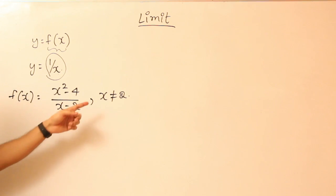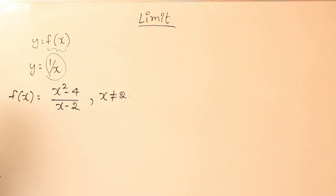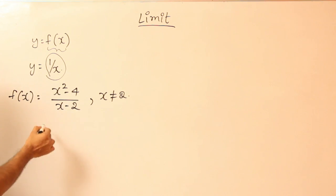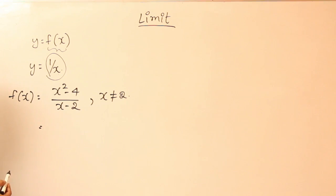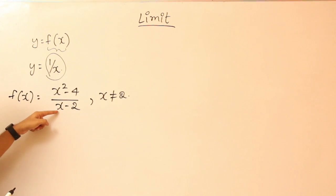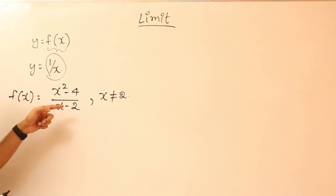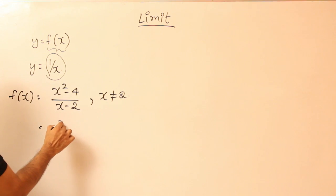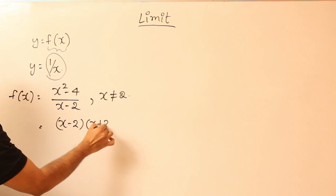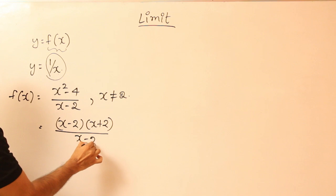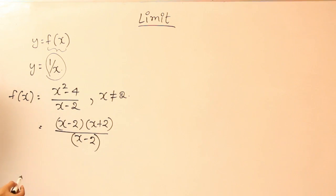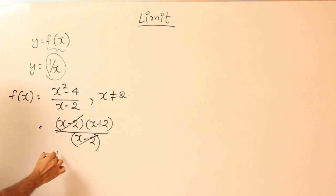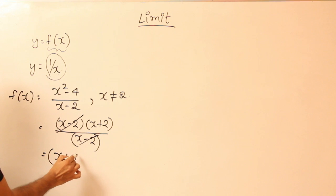Then, since we don't have the value at x equal to 2, I want to know what could be its value at a value close to 2. In order to find that, I will use the factorization method. The very reason we are getting 0 by 0 is because, whenever we get a 0 in the numerator and a 0 in the denominator, it means x minus 2 is a factor of both. So I am going to write it as x minus 2 into x plus 2 divided by x minus 2. You know that x square minus 4 equals this. So you can cancel it off. Therefore, f of x turns out to be x plus 2.